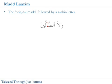Mad lazim is the original madd followed by a sakin letter — and again, a letter with a shadda implies there is a letter there with a sukun on it. Here we have the dad with the fatah-alif, which is your original madd, followed by the lam with the shadda, which implies there is a lam with a sukun within it. This example is from Surah Al-Fatiha, so it should be well known. You must make sure that this is kept to six long.